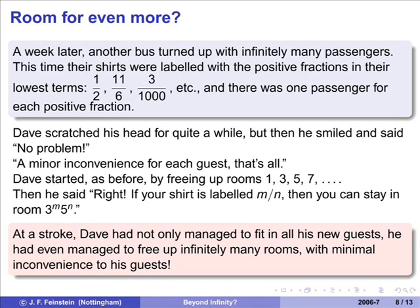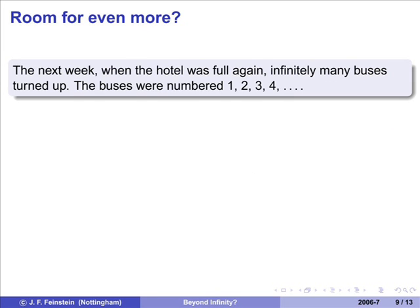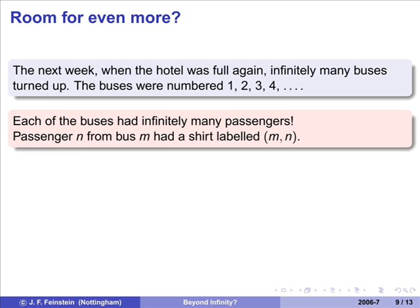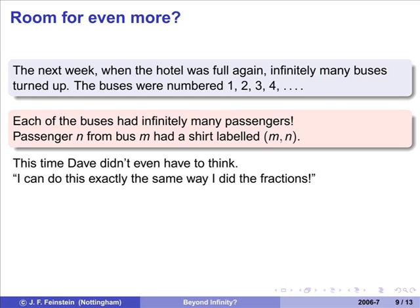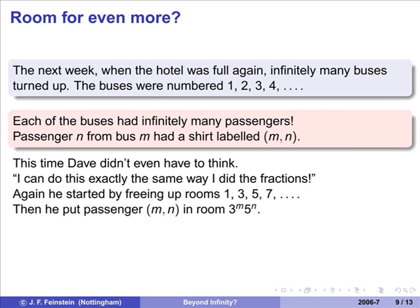So, a week later, when I say the hotel is full, what I really mean is that every room has a guest in it, because as we know, this hotel is never full. Infinitely many buses turned up the next week, and the buses are numbered one, two, three, four, and they've all got infinitely many passengers on. So, I have to tell you what sort of a t-shirt the passenger from the mth bus and the nth passenger on the mth bus was wearing. Well, just wore a t-shirt with this easy symbol, m comma n. And Dave knew how to deal with this straight away, because he'd already figured out how to deal with the fractions. Freed up the rooms as usual, rooms one, three, five, and seven. And then he put the mth passenger from the nth bus into room three to the m, five to the n. This time he did at least fill up all of the three to the m, five to the n's, though it still leaves plenty of other odd numbers free.